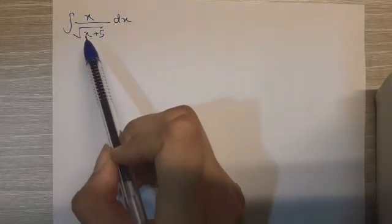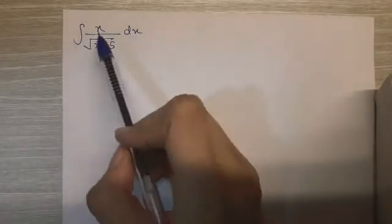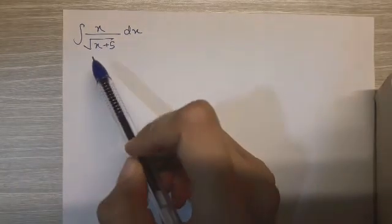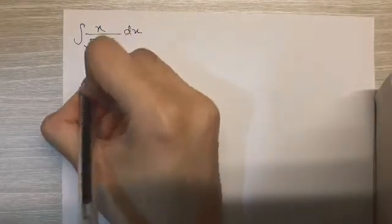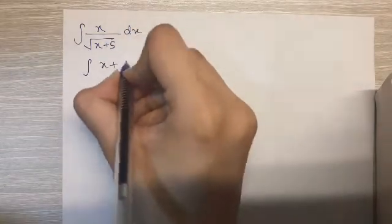Hey guys, welcome back to my channel. Today we'll be solving this question: the integral of x upon root x plus 5. So let's begin. We have x in the numerator and the denominator, so what I'm going to be doing is I'll add and subtract 5 in the numerator. So we have x plus 5 minus 5 upon root x plus 5.